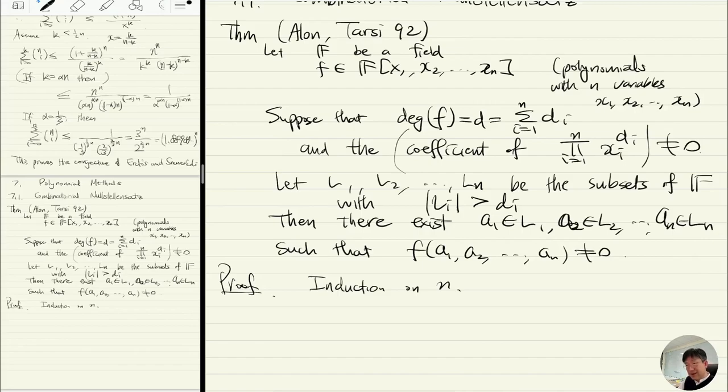What happens if n is one? That means when you have only one variable X1, and F is a polynomial of degree d, but L1 has more than d elements. A degree d polynomial has at most d distinct roots. So if you have more than d elements, at least one of them is not a root, so f(a1) is nonzero. It's trivial if n equals one.